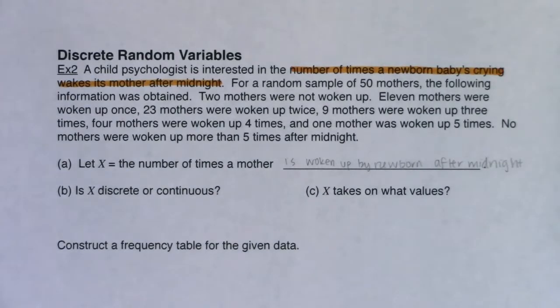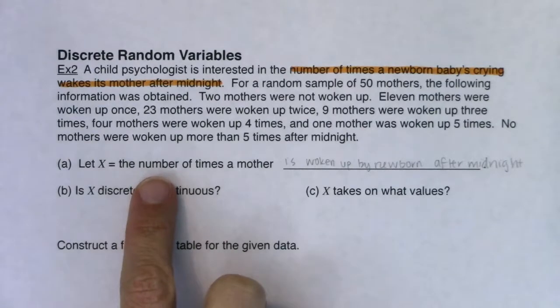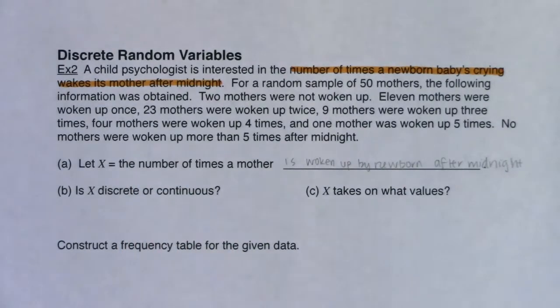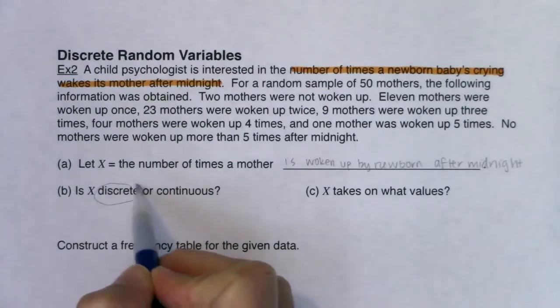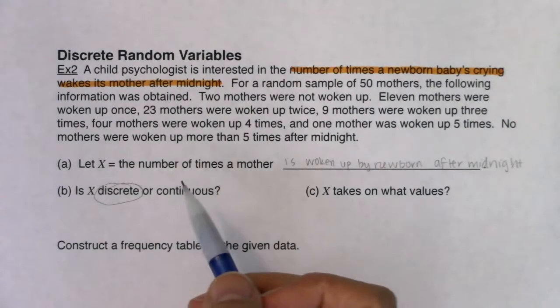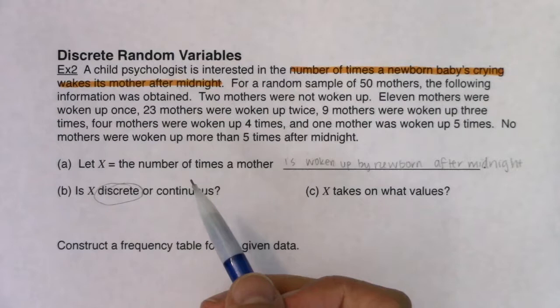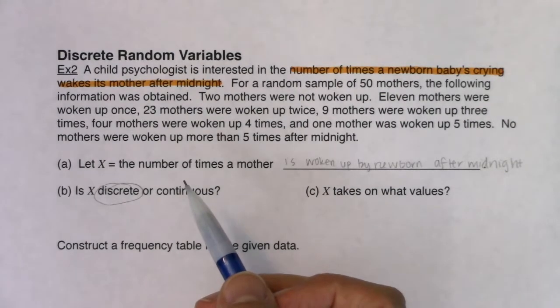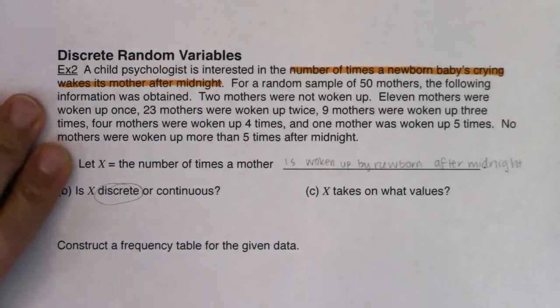If we start going a little further, is this variable discrete or continuous? Would I count the number of times that a mother was woken up, or would I measure it? I think you can hear it's discrete. I would count it. Another good rule of thumb, just for chapter four, it's always discrete. That's what we're dealing with in chapter four.